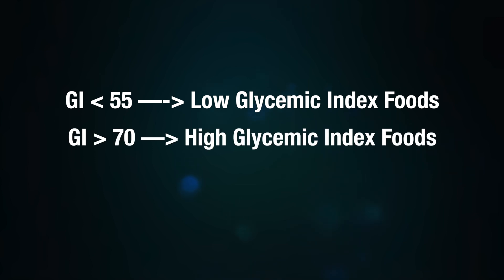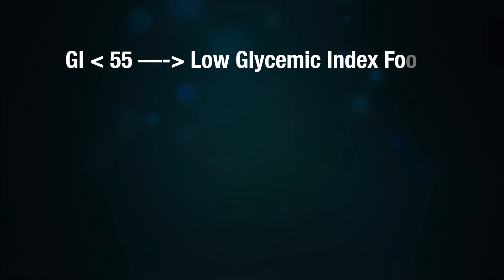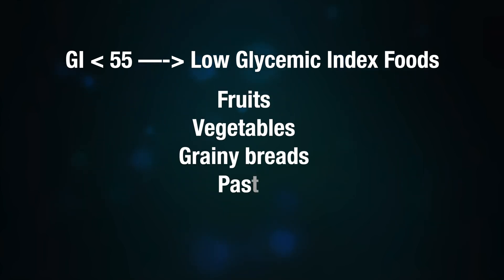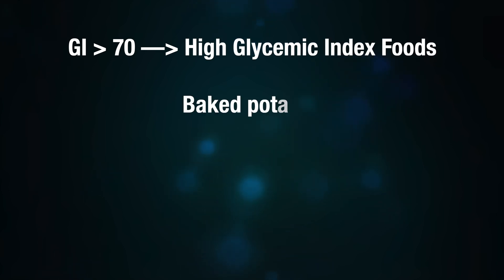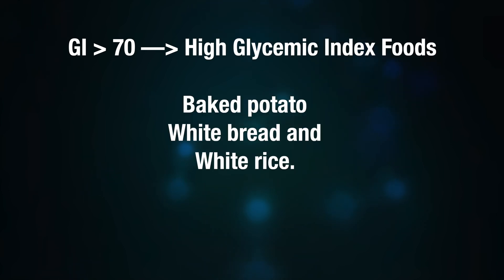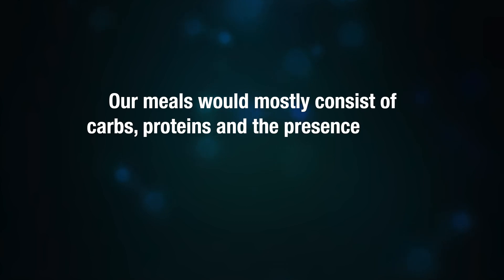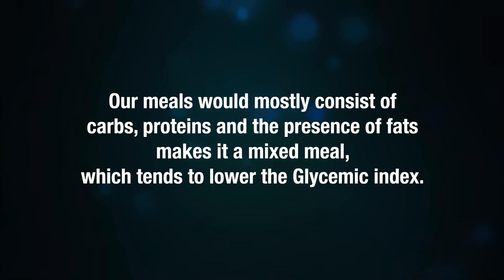Foods that are 70 or more are considered high GI foods. Low glycemic index foods have values of 55 or less and include fruits, vegetables, grainy bread, pasta, and legumes. High glycemic index foods have values of 70 or more and include baked potato, white bread, and white rice.